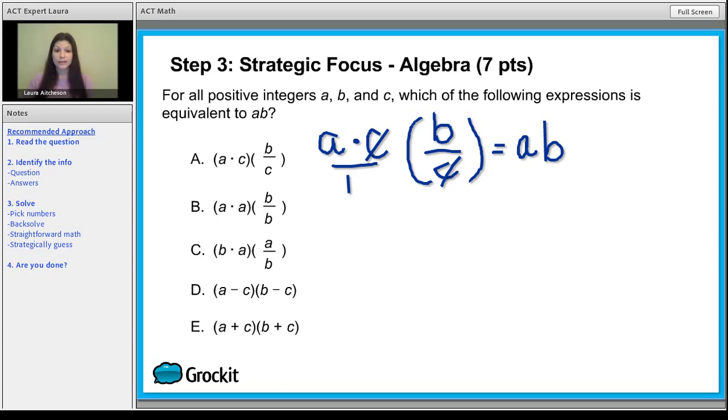Now that's not the only way to solve. You can also pick numbers. We don't want to pick 1 and 0, they have special properties, but 2 and 3 are our most popularly picked numbers. We have c as well, so we're going to throw in the number 4. So for answer choice a, we decided a is 2, c is 4, b is 3, and c is 4. So we multiply that across, and we get 8 times 3 fourths, which is 6.